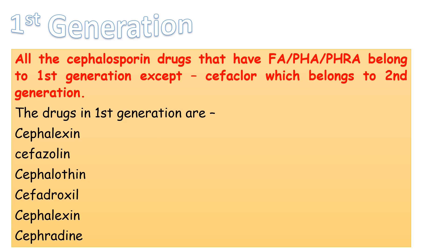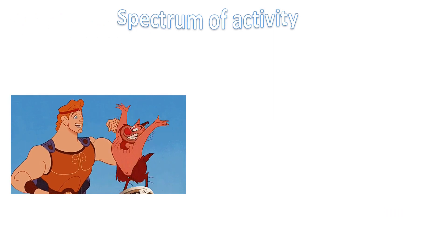All cephalosporin drugs that contain 'FA,' 'PHA,' or 'PRA' in their name belong to the first generation — with the exception of cefaclor (C-E-F-A-C-L-O-R), which belongs to the second generation. The drugs in the first generation include cefalexin, cefazolin, cephalothin, cefadroxil, cefalexin, and cefradine.